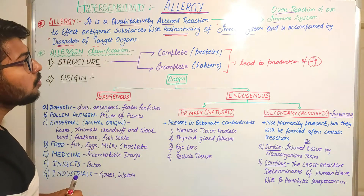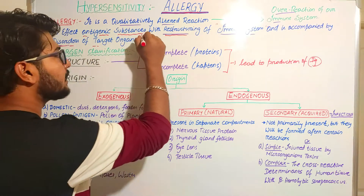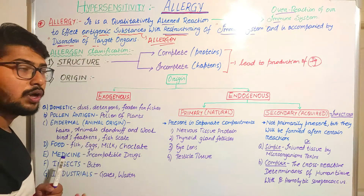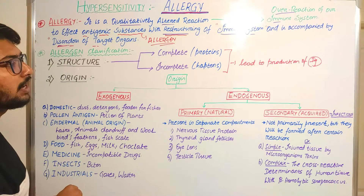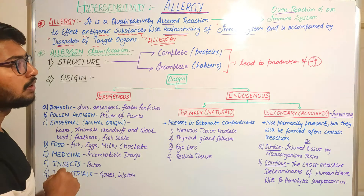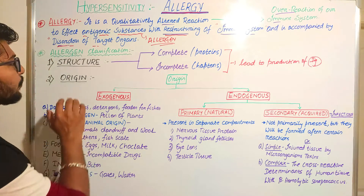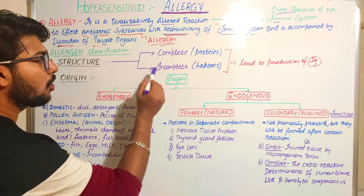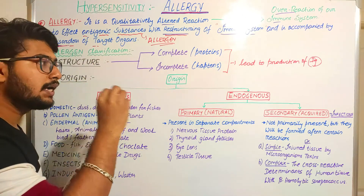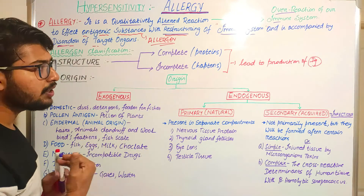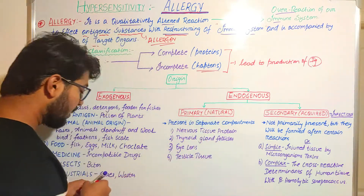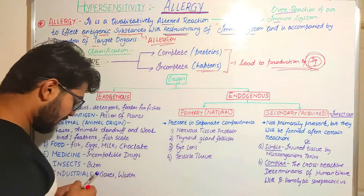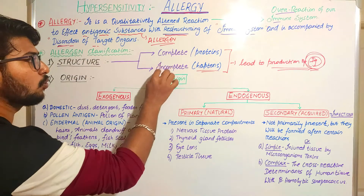This antigenic substance is called an allergen — the substance that causes allergy. The classification of allergens is first made according to structure and origin. According to structure, allergens can be complete — fully proteinous — or incomplete, such as haptens. Both have the capacity to lead to antibody production and immune cell reactions, so both are responsible for allergic reactions.